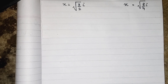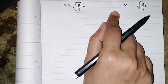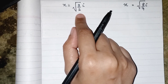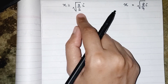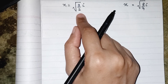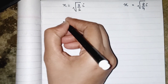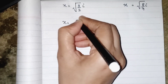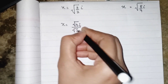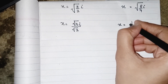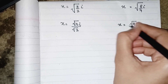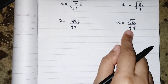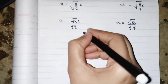We have found the values of x, but we cannot leave them as written because whenever we have a square root in the denominator, we must rationalize. So the first solution is x = (√3 · i)/√2 and the second is x = (√8 · i)/√7. We can clearly see roots in both denominators, so we must rationalize.